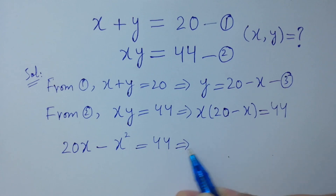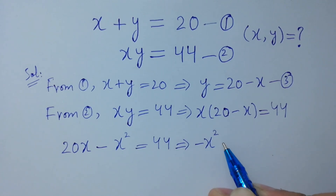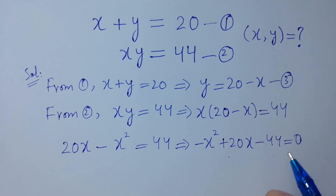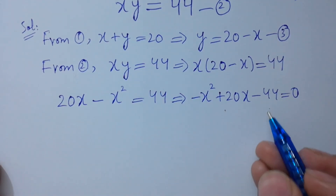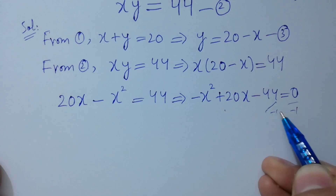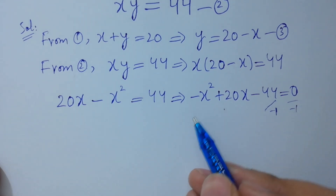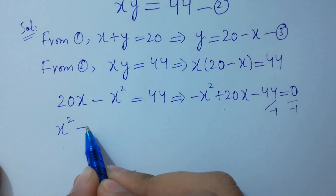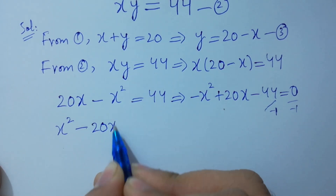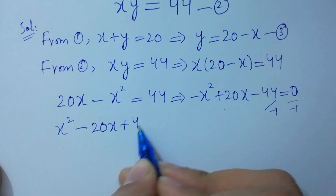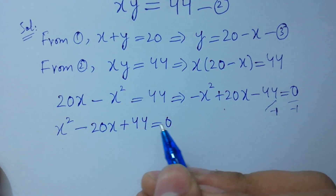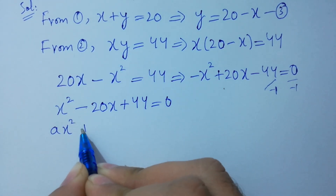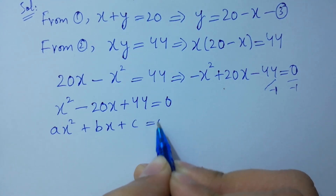So here we have minus x squared plus 20x minus 44 equal to 0. Dividing by minus on both sides, we get x squared minus 20x plus 44 equal to 0, which is a quadratic equation of the form ax squared plus bx plus c equal to 0.